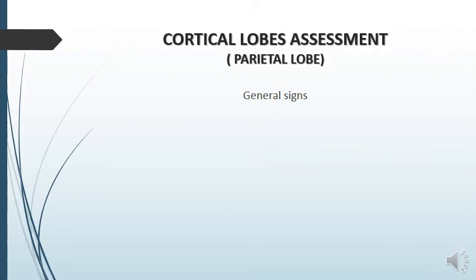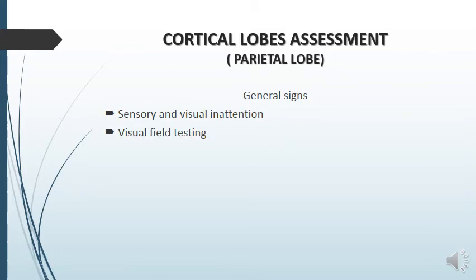Now we will discuss general signs of parietal lobe dysfunction. First, we will look for sensory and visual inattention — when one arm or leg is tested at a time, sensation is normal, but when both sides are tested simultaneously, the sensation is appreciated only on the normal side. Then we will look for visual field defects, as the visual pathway involves passage through the parietal lobes.